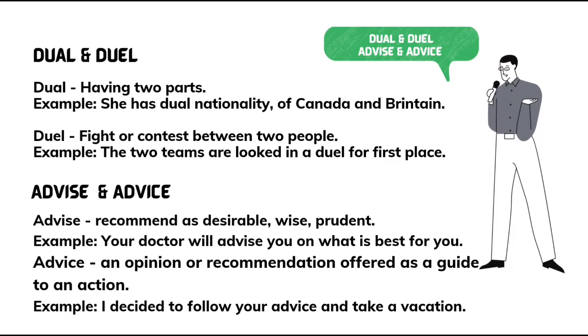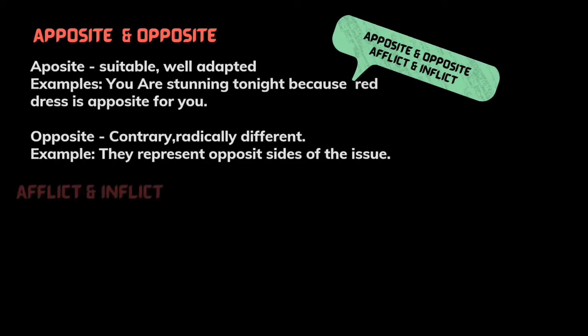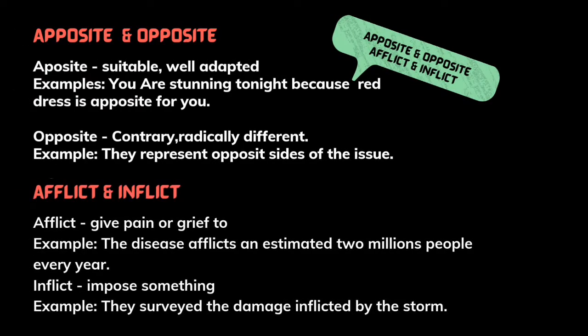Apt and opposite. Apt means suitable or well adapted. Opposite means contrary or radically different. Example of apt: you are stunning tonight because the red dress is apt. Example of opposite: they represent opposite sides of the issue.